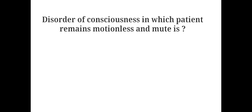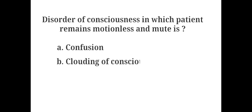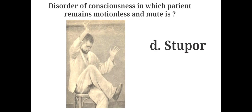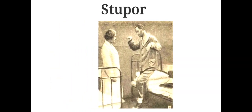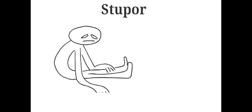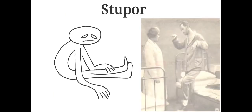Disorder of consciousness in which patient remains motionless and mute is: A. Confusion, B. Clouding of consciousness, C. Hallucination, D. Stupor. The answer is D. Stupor. Stupor is a state of unresponsiveness in which a person seems unaware of the surroundings. There will be total immobility along with mutism and weakened responses to all kinds of stimuli.